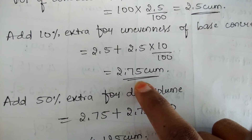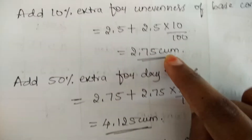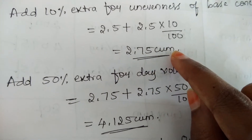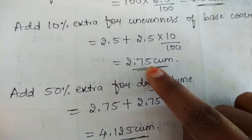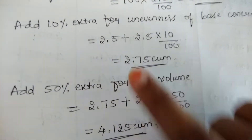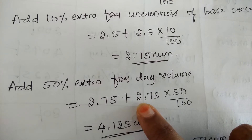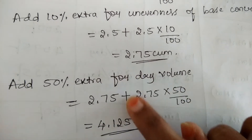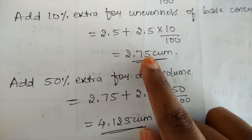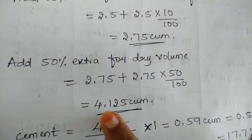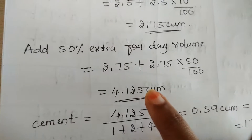So this gives you the new volume of concrete including the unevenness of the bed. Now for this new volume we again have to add 50% extra for the dry volume. This is the volume of the wet concrete; for finding the dry volume we have to add 50% more. That means 2.75 plus 2.75 into 50 by 100. On adding these two things we will get a volume of 4.125 m³, which represents the volume of the dry concrete.